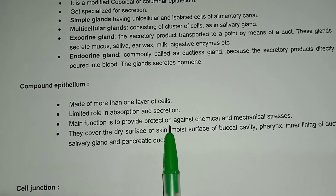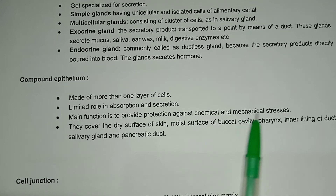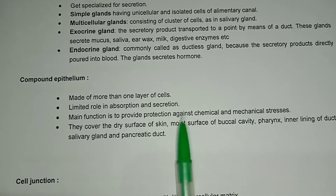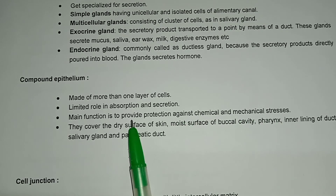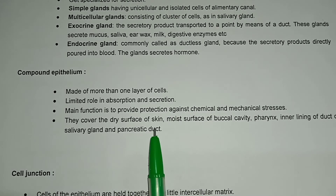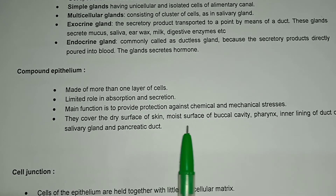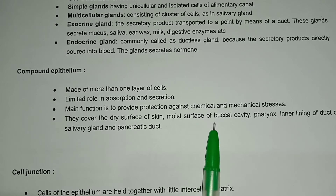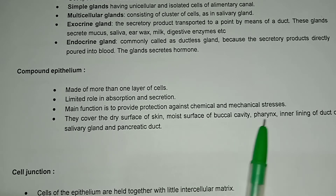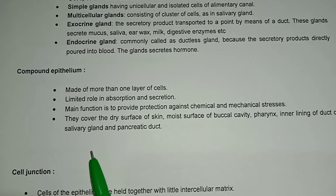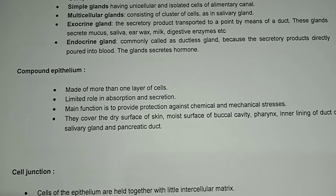Compound epithelium is made of more than one layer of cells and has a limited role in absorption and secretion. Its main function is to provide protection against chemical and mechanical stress. It covers the dry surface of skin, the moist surface of the buccal cavity, pharynx, and the inner lining of ducts of salivary glands and pancreatic duct.